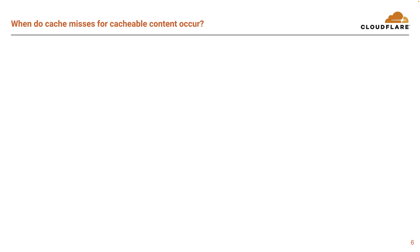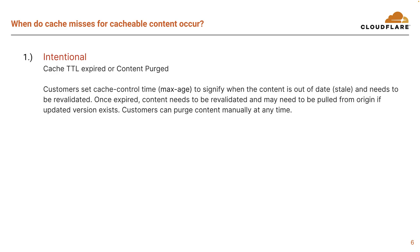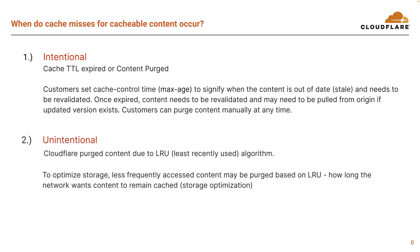So now that we have a better understanding of Cloudflare CDN, when does a cache miss occur? We have two scenarios. First, intentional: cache TTL expired or content purged. Customers set cache control time to signify when the content is out of date and needs to be revalidated. Once expired, content needs to be revalidated and may need to be pulled from the origin if an updated version exists. Customers can purge content manually at any time. Second, unintentional: Cloudflare purged content due to LRU or least recently used algorithm. To optimize storage, less frequently accessed content may be purged based on LRU or how long the network wants content to remain cached.